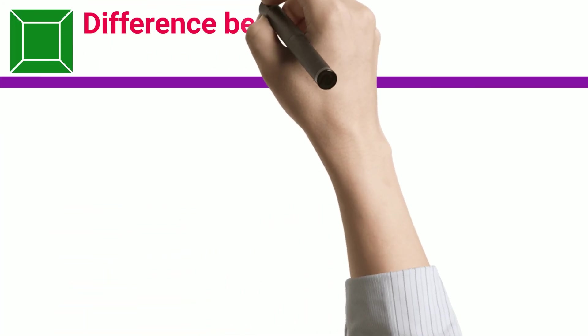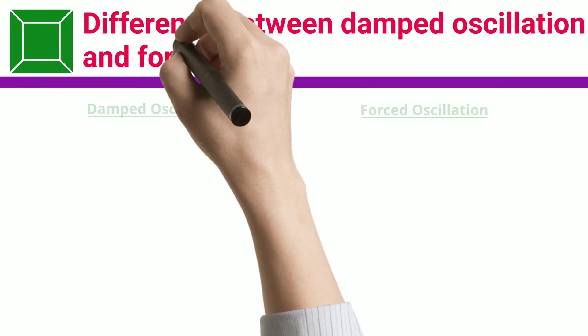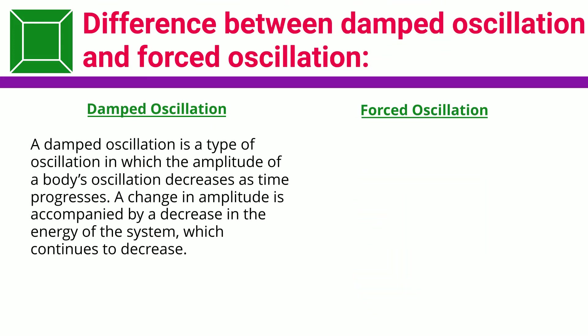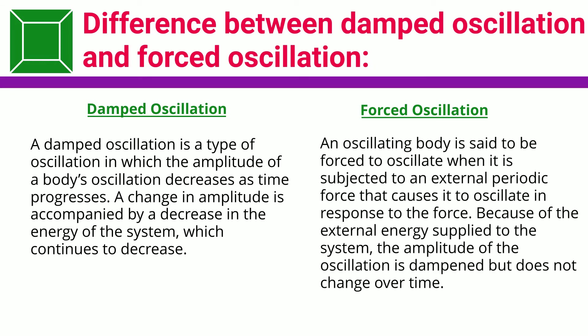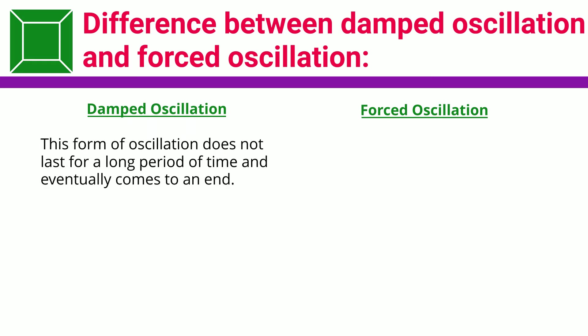Difference between Damped Oscillation and Forced Oscillation. A damped oscillation is a type of oscillation in which the amplitude of a body's oscillation decreases as time progresses. A change in amplitude is accompanied by a decrease in the energy of the system, which continues to decrease. An oscillating body is said to be forced to oscillate when it is subjected to an external periodic force that causes it to oscillate. Because of the external energy supplied to the system, the amplitude of the oscillation is dampened but does not change over time.